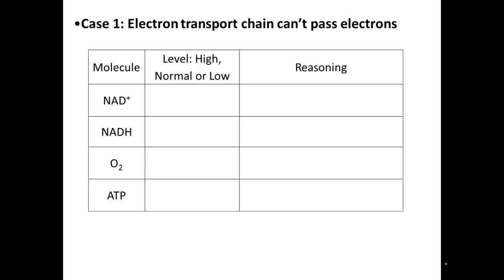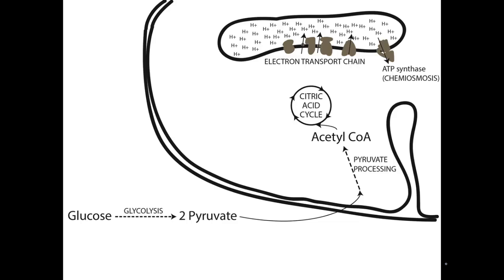Let's consider this first hypothesis: that the electron transport chain won't pass electrons, or can't pass electrons. We're going to consider the levels of NAD+, NADH, oxygen, and ATP if this is the case.